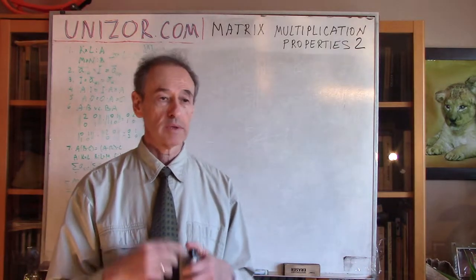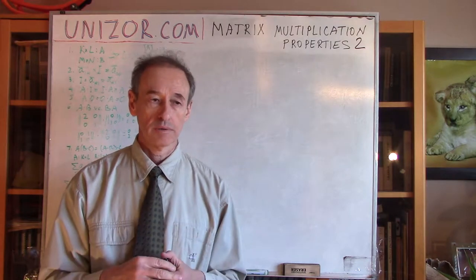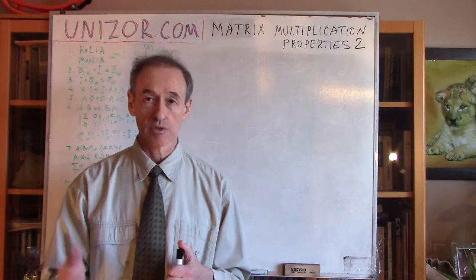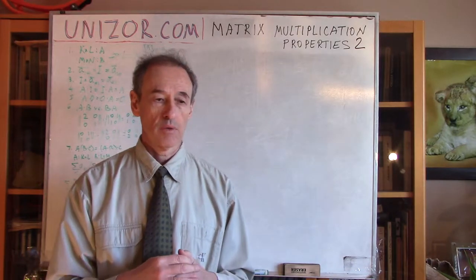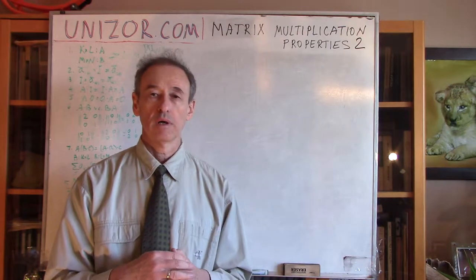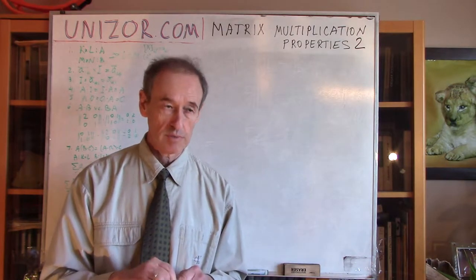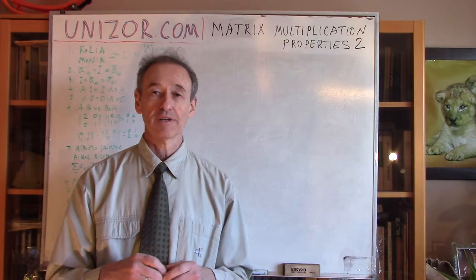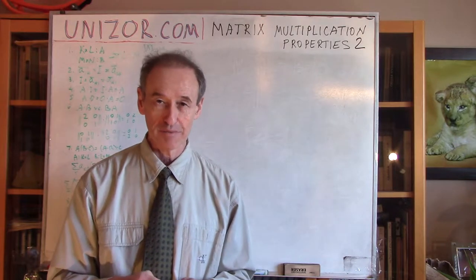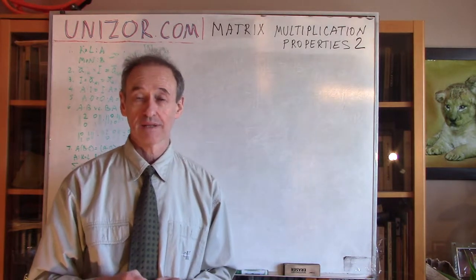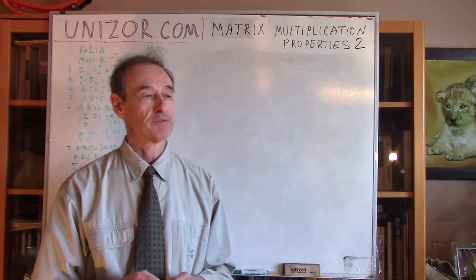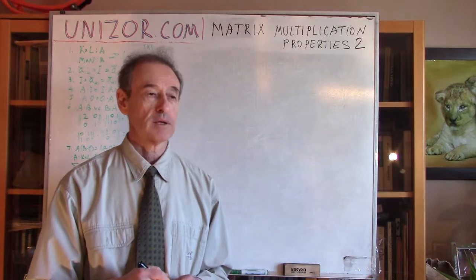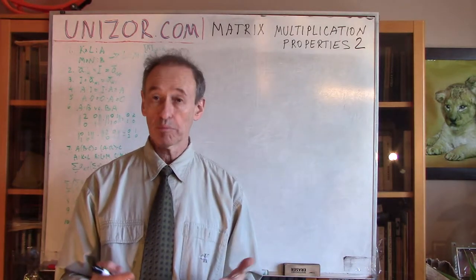Today we will consider more interesting properties like the associative law, distributive law, etc. Last lecture was about some preliminary characteristics of matrix multiplication and the commutative property. Unfortunately, commutative property is not really a property of matrix multiplication — I gave you an example of why. But associative and distributive laws do present in matrix multiplication and they do require some proof.